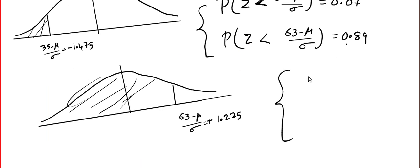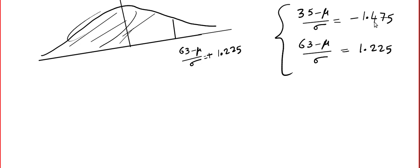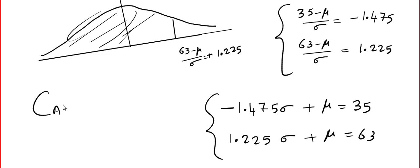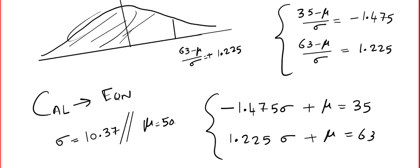We end up with two equations: 35−μ = −1.475σ, giving −1.475σ + μ = 35 (equation 1), and 63−μ = 1.225σ, giving 1.225σ + μ = 63 (equation 2). Take your calculator, put it in equation-solving mode, and solve. I got σ = 10.37 and μ = 15.3. That is it. I will be back with the next video to discuss the remaining questions. Till then, bye!